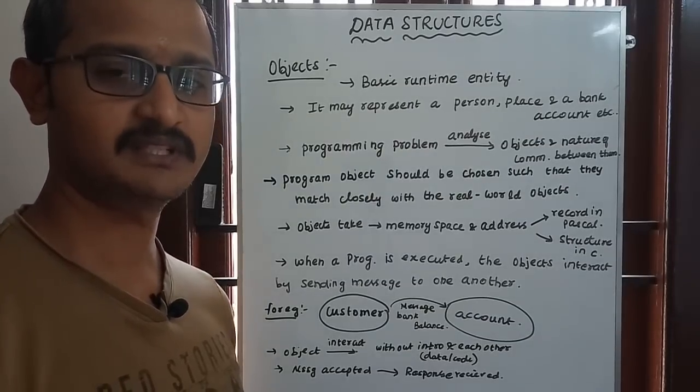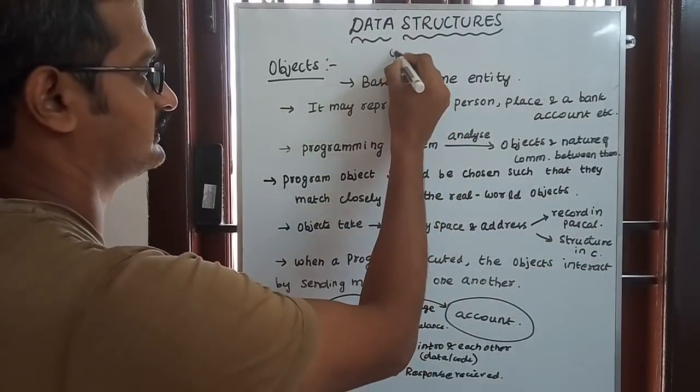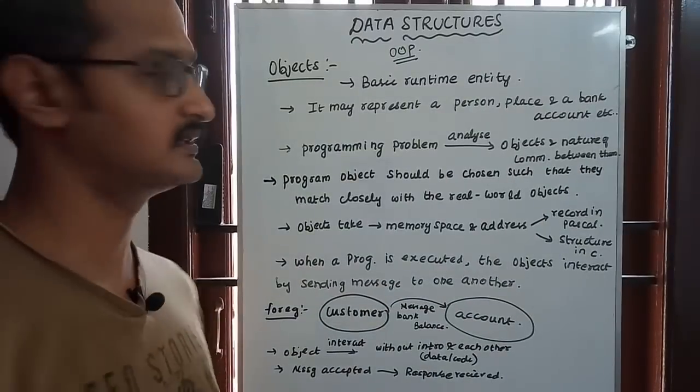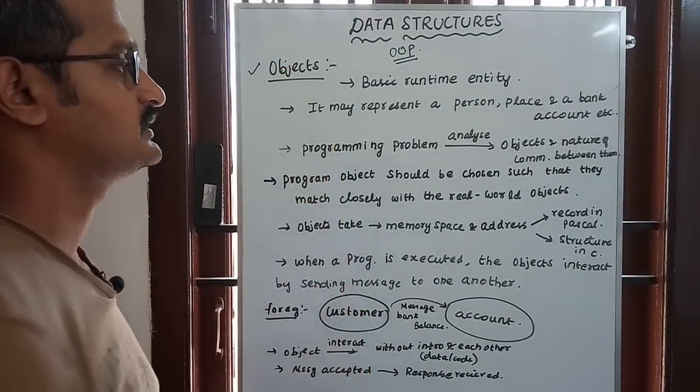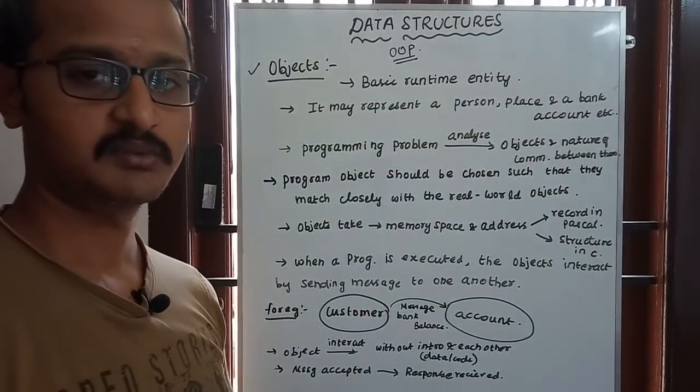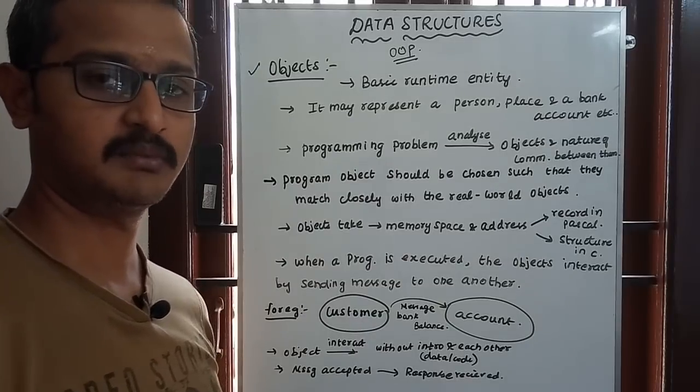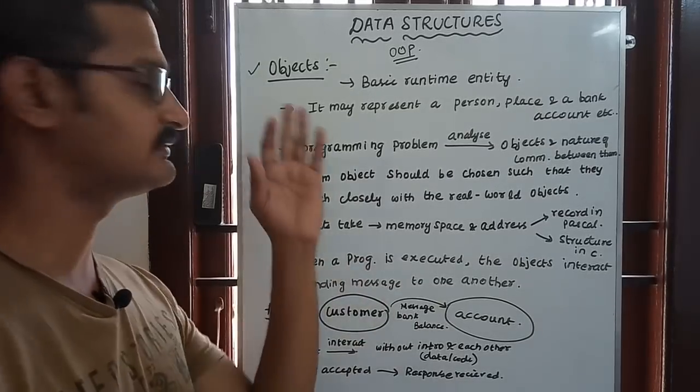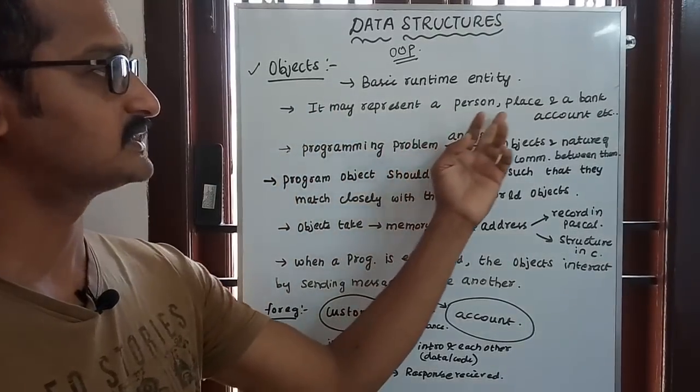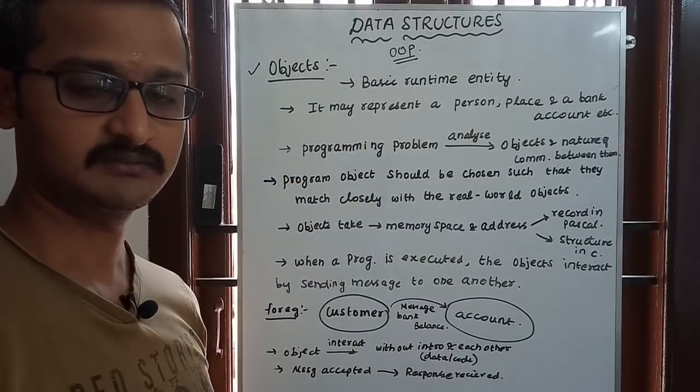Hi friends, in object-oriented programming, objects play a vital role. An object is a basic runtime entity. Each entity specifies an object. It may represent a person, a place, or a bank account. Any one of these can be represented as an object.